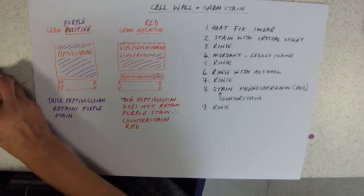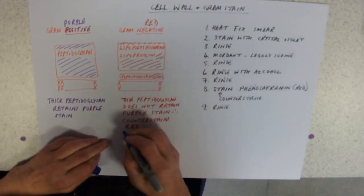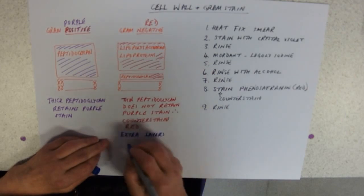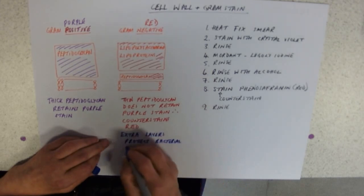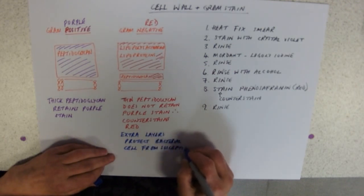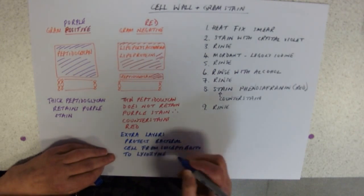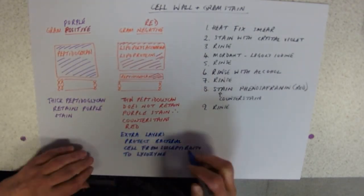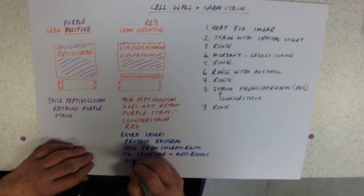Now why would you need to know what gram status, what the cell wall was like? Well it just so happens that these extra layers here, those extra layers of lipopolysaccharide and lipoproteins, protect the bacterial cell from susceptibility to lysozyme, which is the enzyme in tears that breaks down the bits of peptidoglycan, makes the cell wall less strong, and therefore they burst because of osmotic lysis, and antibiotics, especially penicillin.